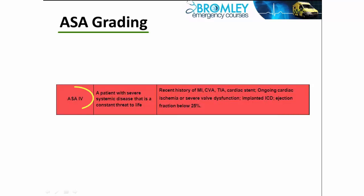ASA grade 4 covers severe systemic disease that is life-threatening: recent heart attack, stroke, TIA, ongoing cardiac ischaemia or valve dysfunction, and ejection fraction below 25% — so quite severe heart failure.